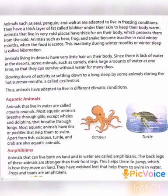Animals such as seal, penguin, and walrus are adapted to live in freezing conditions. They have a thick layer of fat called blubber under their skin to keep their body warm. Animals that live in very cold places also have thick fur on their body, which protects them from the cold.